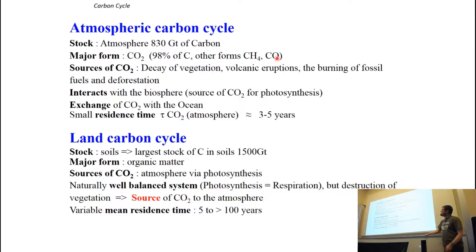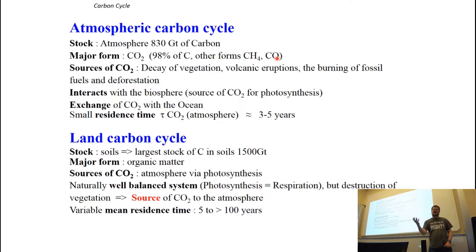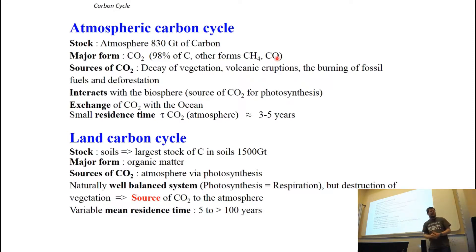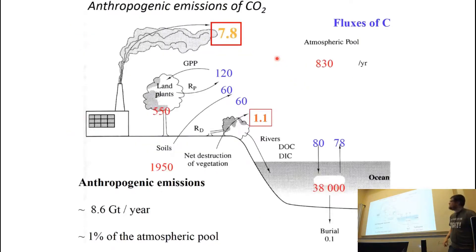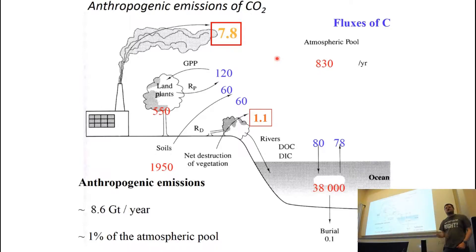To summarise the atmospheric carbon cycle: the atmosphere has at the moment 830 gigatons of carbon, most of that is CO2, and the large fluxes are between the biosphere and the atmosphere. We do get this switch between winter and summer, and that's what explains the sawtooth pattern. We've already mentioned the deforestation flux — 1.1 gigatons of carbon a year that we're adding to the atmosphere by chopping down trees and burning them.